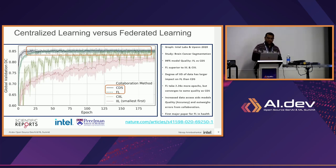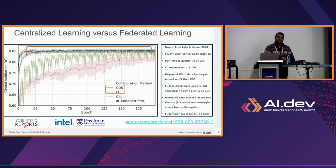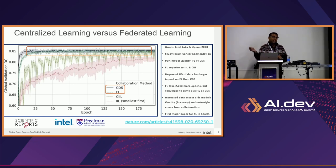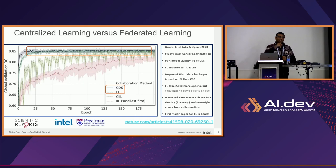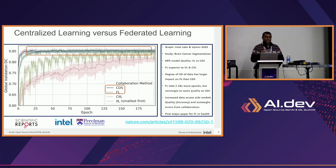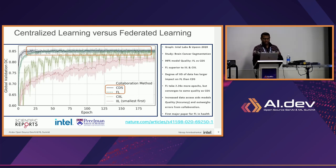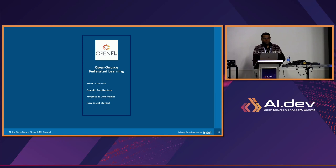Federated learning was first introduced in a Google paper from 2017. They wanted to train data from Android phones — it's private to users — so they couldn't centrally move it to servers. They coined the term 'federated learning,' doing training on the phones themselves and sending only the weights back, doing a weighted average they called federated averaging. That's how it started.